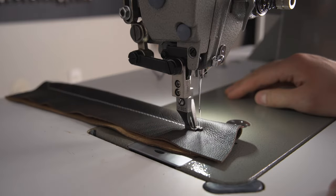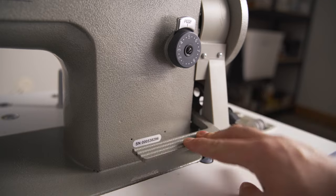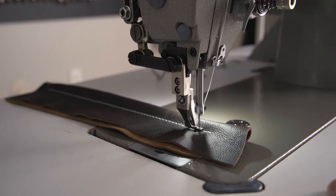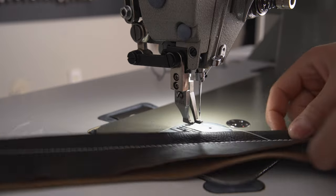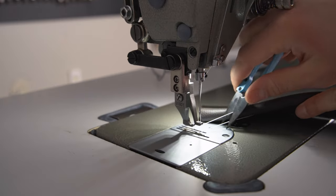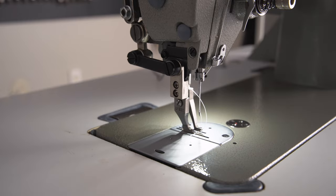To reverse stitch, while the needle is in the down position, push down the reverse stitch lever. The knee lift will raise the presser foot as well as loosen the thread tension, allowing you to easily remove your project once you have finished stitching.